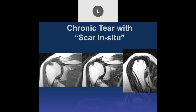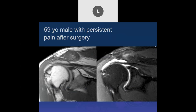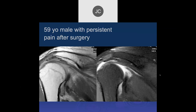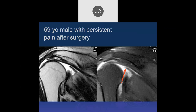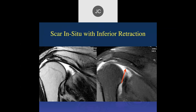A 59-year-old with persistent pain after rotator cuff repair surgery. It looks like the musculotendinous junction has retracted again — concerning for a re-tear with some scar inside. There's an interstitial tear going posteriorly into the infraspinatus tendon, making this a large tear. There's some metal artifact from the prior surgery, and what appears to be scar in situ coming across the repair site.